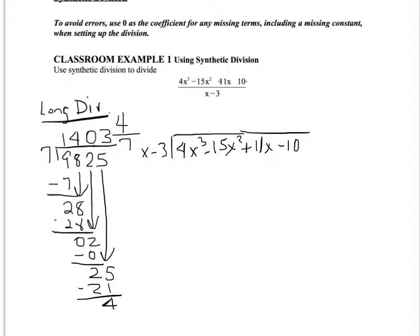We're going to use the same process we just did with long division. I take the first term in the divisor and look at the first term in the dividend — x will go into 4x³ how many times? That's 4x². Just like with numbers, we take what we wrote and multiply it times our divisor. Our divisor is a binomial, so when I multiply 4x² times x minus 3 I use the distributive property, giving me 4x³ minus 12x².